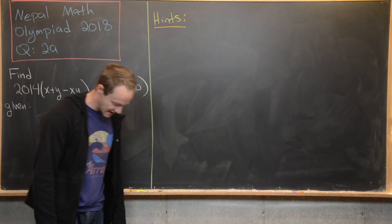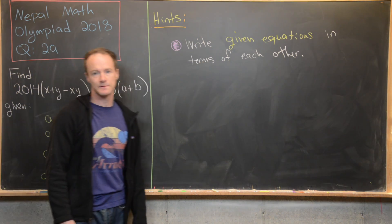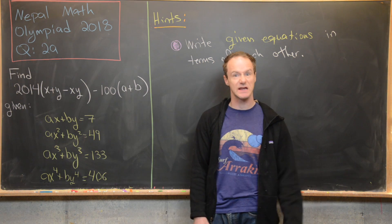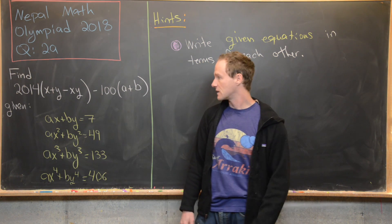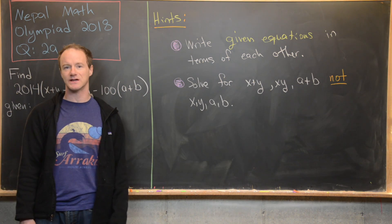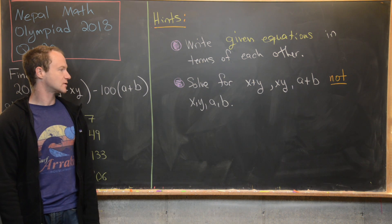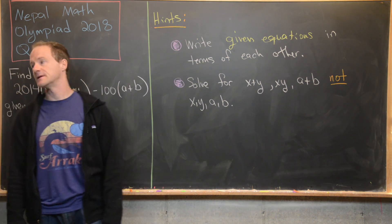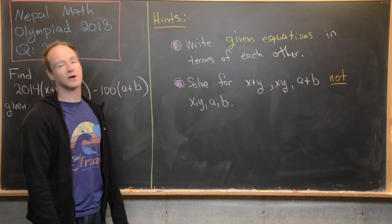Let's look at some hints. The first hint is to write the given equations in terms of each other — for example, write the third equation in terms of the second, or the fourth in terms of the third. The second hint is to solve for x + y, xy, and a + b as grouped quantities rather than the individual variables x, y, a, and b. You'll see this works really well with the first hint and our goal expression.